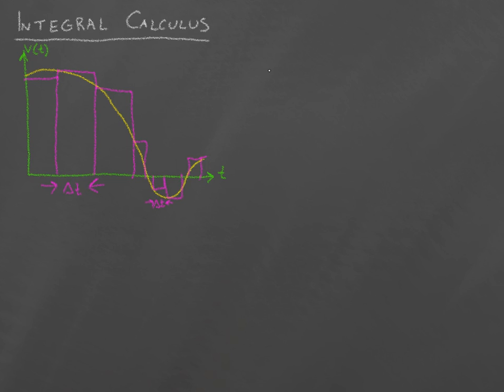Okay, so how does this help us find the area underneath the curve? Well, we can find the area of one rectangle. Because we know that that's just going to be, for a single rectangle, it's going to be the velocity at that point.